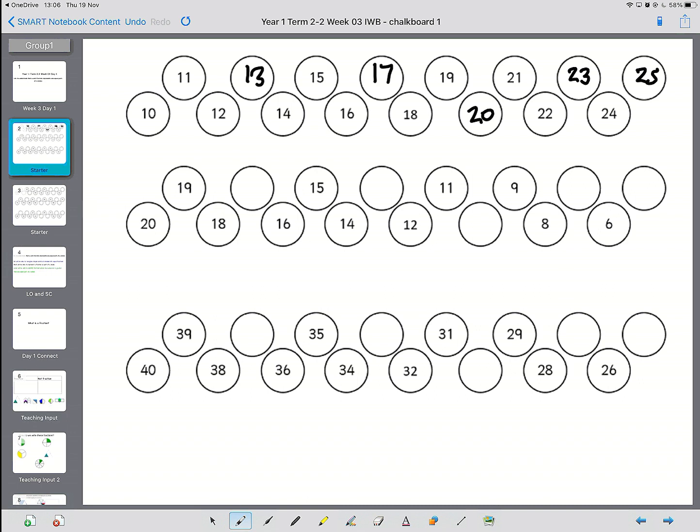Now this next one starts at 20, but it doesn't go 21. It goes 20, 19, 18. So it's going backwards. 17, 16, 15, 14, 13, 12, 11, 10, 9, 8, 7, 6, 5.